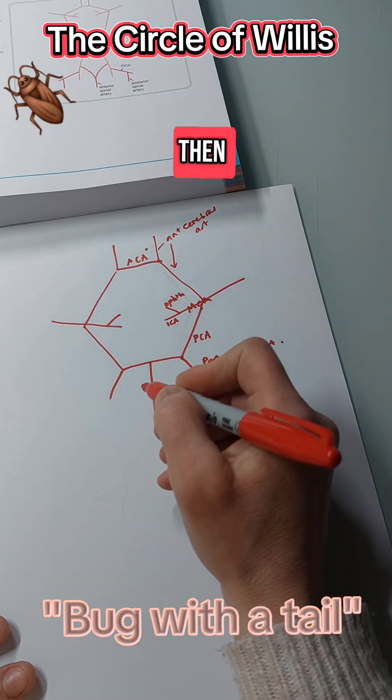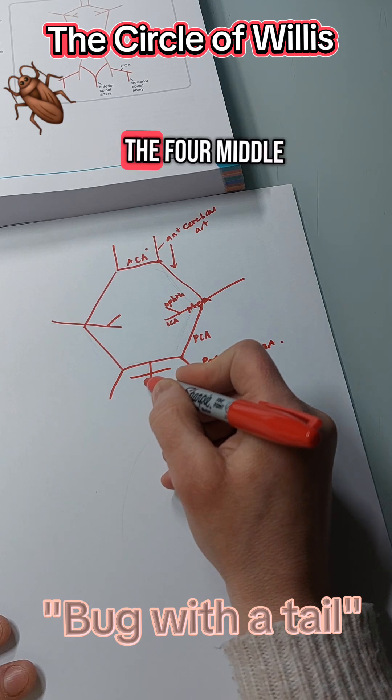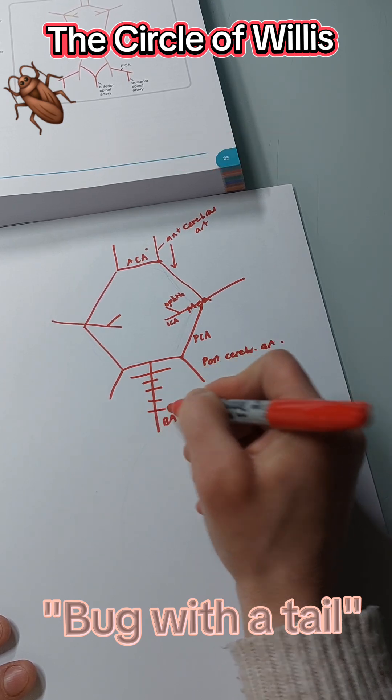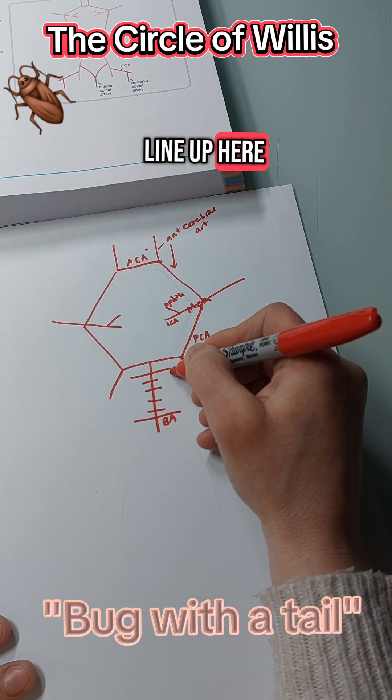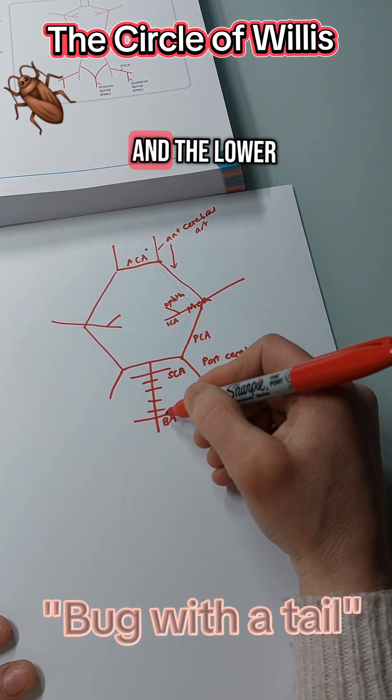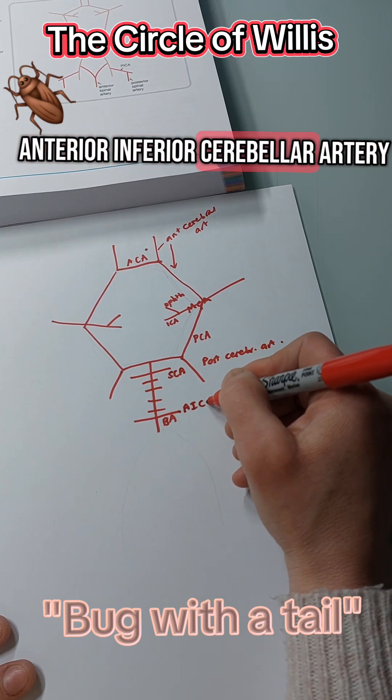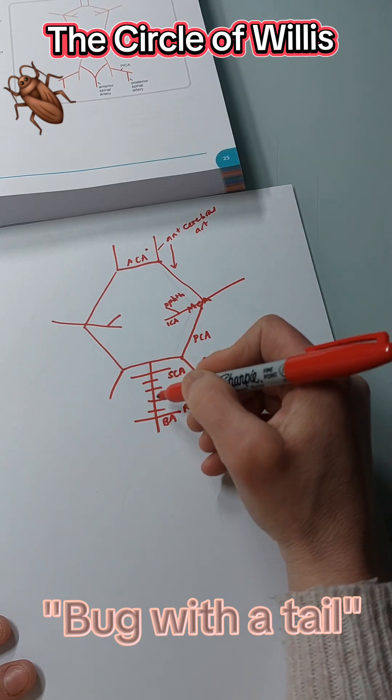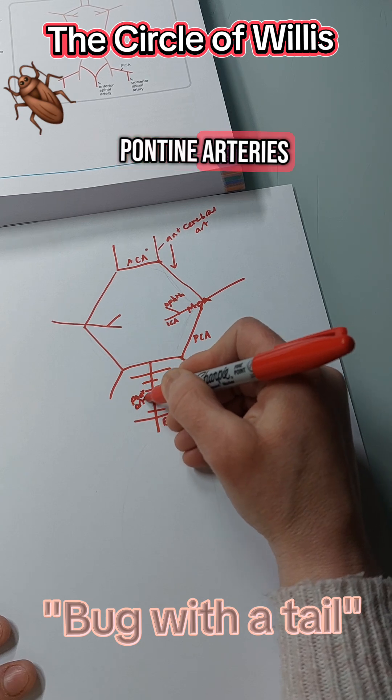Then I draw six lines horizontally through them. The four middle lines are shorter. So this larger line up here represents the superior cerebellar artery, and the lower one is the anterior inferior cerebellar artery. And these small ones in the middle represent the pontine arteries.